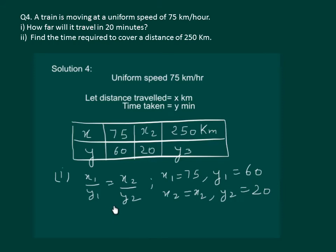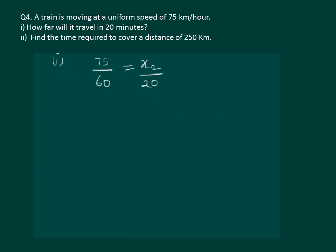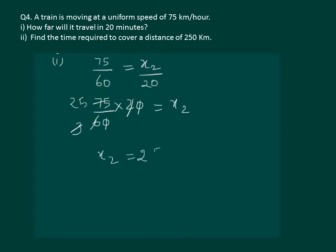Using the property of direct proportion, we substitute x1 equal to 75, y1 equal to 60, x2 we have to find out, and y2 equal to 20. On substituting the values and cross multiplying, we get x2 equal to 25. That means the train will travel 25 kilometers in 20 minutes.